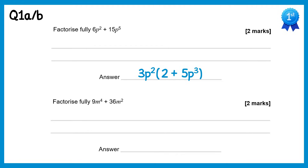For the next one we factorise out the highest common factor again — this time it's 9m squared. What would we times this by to get 9m to the 4? Well, that's m squared. And to get 36m squared we just need to times by 4.